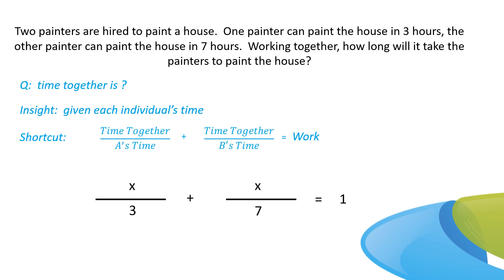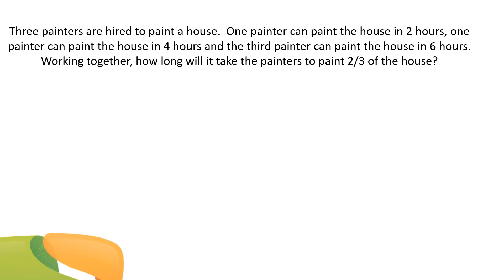Now we solve for x. The fastest way to add fractions is to find the common denominator — in this case, 21 — and multiply it through the entire equation. That gives us 7x + 3x = 21. With simple algebra, x equals 21 over 10.